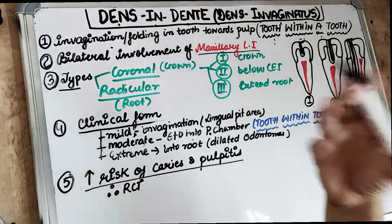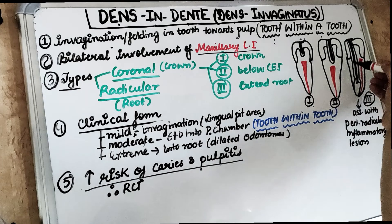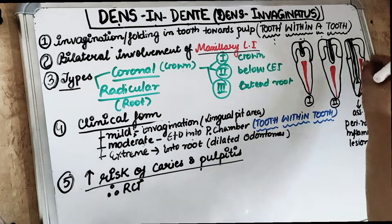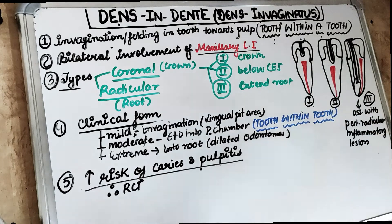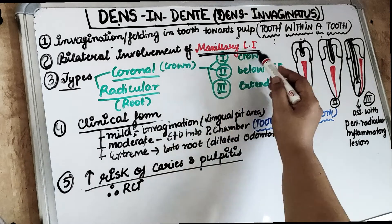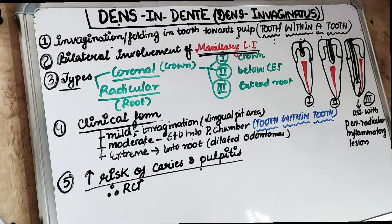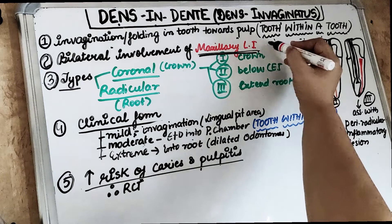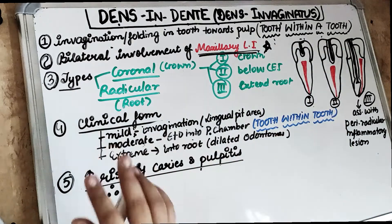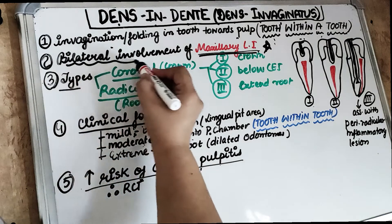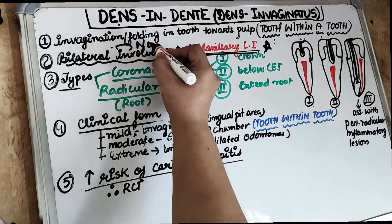The most commonly affected tooth is the maxillary lateral incisor — this is the most commonly involved tooth. Usually there is bilateral involvement, though unilateral involvement can also occur.